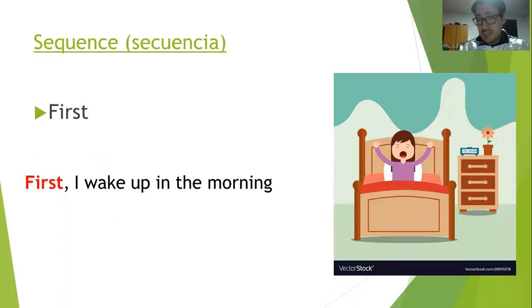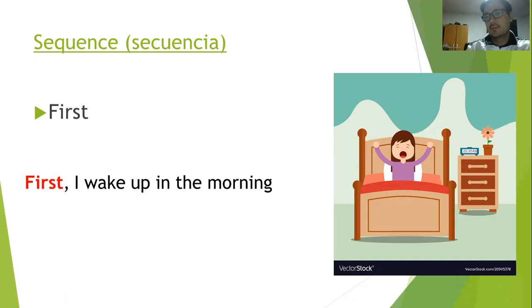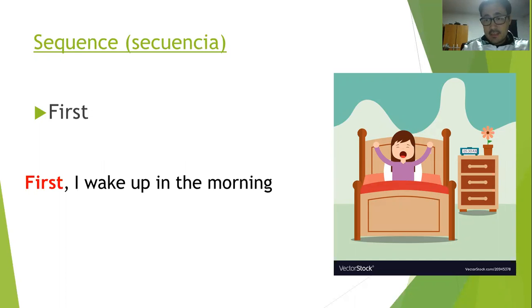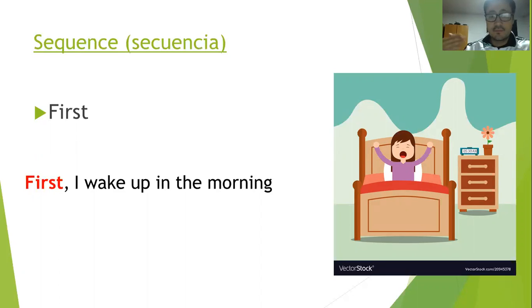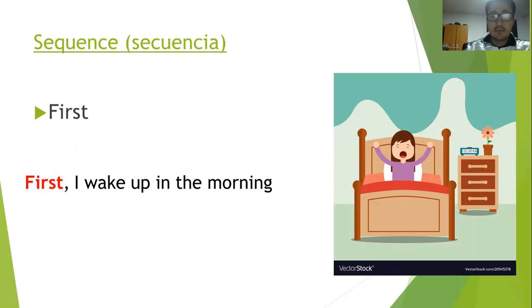¿Qué es la secuencia? Quizá algunos tienen alguna duda con eso. La secuencia es el orden en que se realizan las cosas. Vamos a ver algunas palabras y ejemplos. La primera palabra es First. First significa primero — lo que yo primero hago. Entonces puedo decir: First, I wake up in the morning. Relatando una rutina: primero yo me levanto en las mañanas.